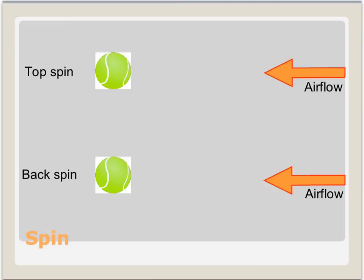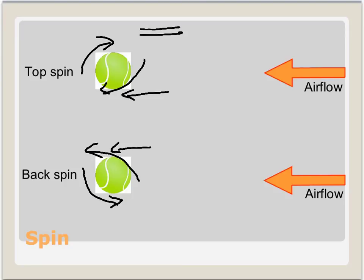As a projectile spins, one side spins in the same direction as that of the incoming airflow. This creates a low pressure zone. The other side spins in the opposite direction, creating a high pressure zone. Therefore, range is decreased with top spin and increased with back spin.